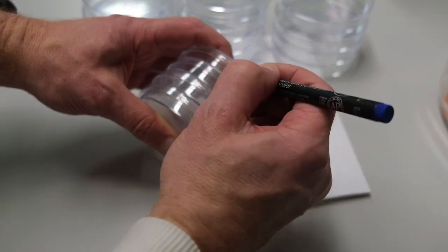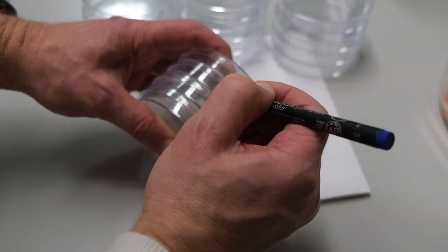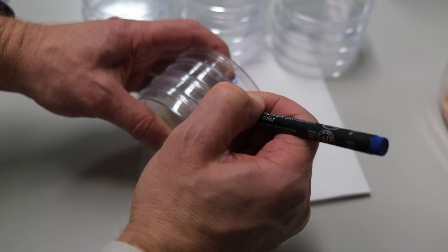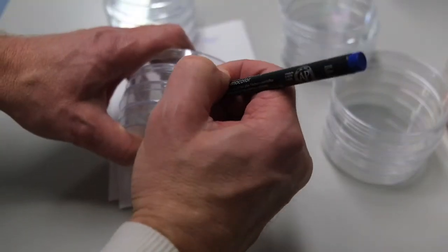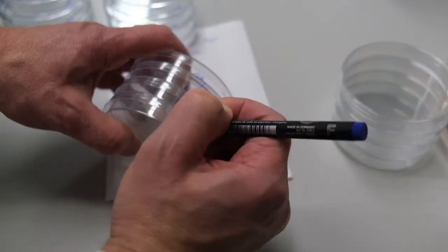And label them with the type of media we're going to use. NA for nutrient agar. Label all 16 on the bottom of the plates at the side.